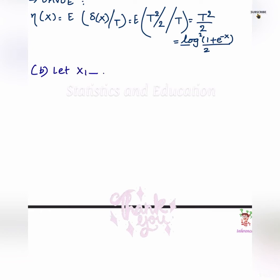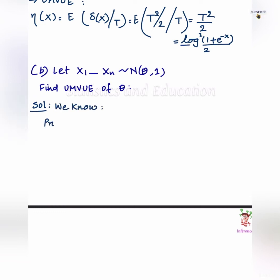In this example, we have been given X1, X2, ... Xn as a random sample from normal theta, 1 and we have to find UMVUE of theta. We already know that summation Xi is a complete and sufficient statistic for the given family of distribution.